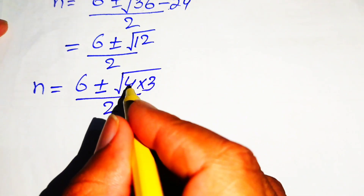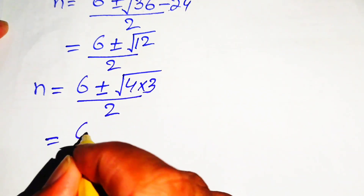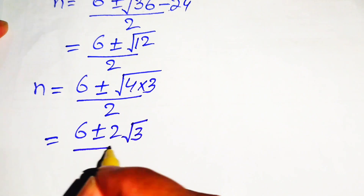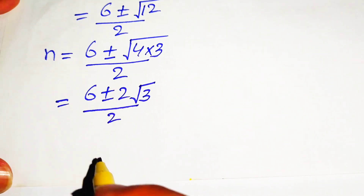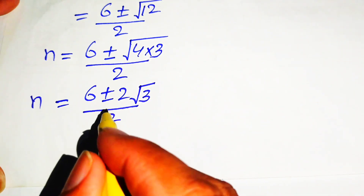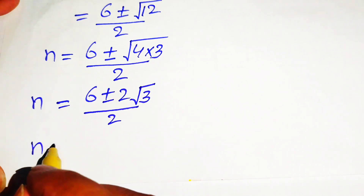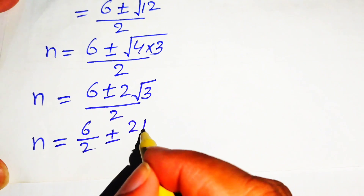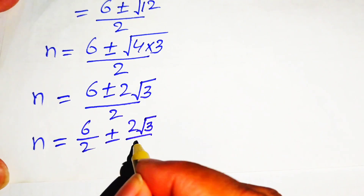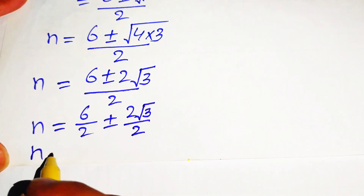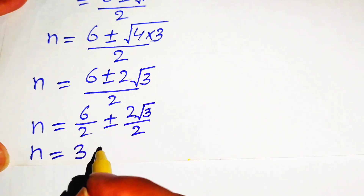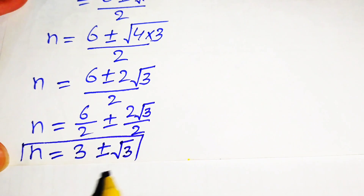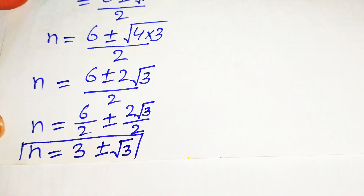Since the square root of 4 equals 2, we rewrite as 6 plus or minus 2 times square root of 3, divided by 2. Separating the fraction: 6 over 2 plus or minus 2 times square root of 3 over 2, which simplifies to n equals 3 plus or minus square root of 3. These are the two values of n.